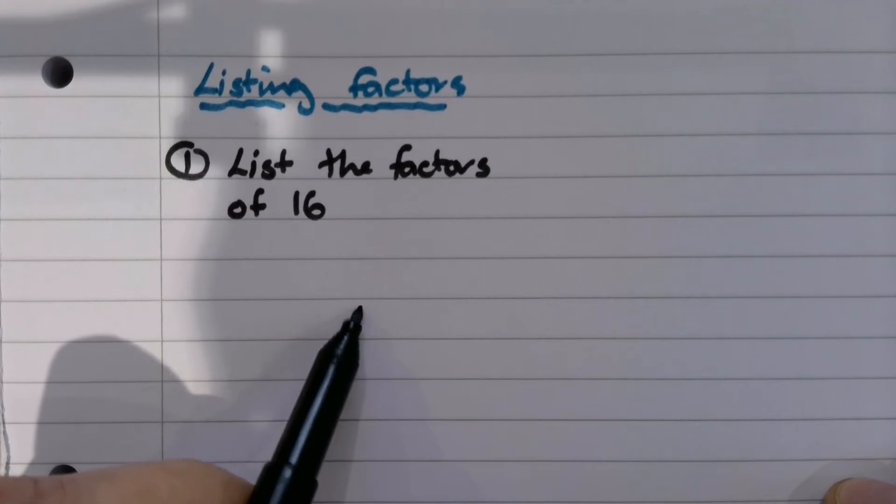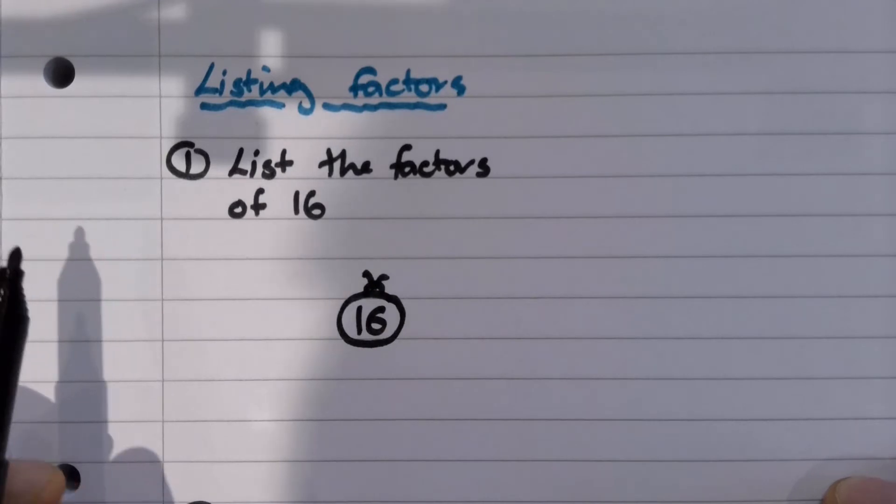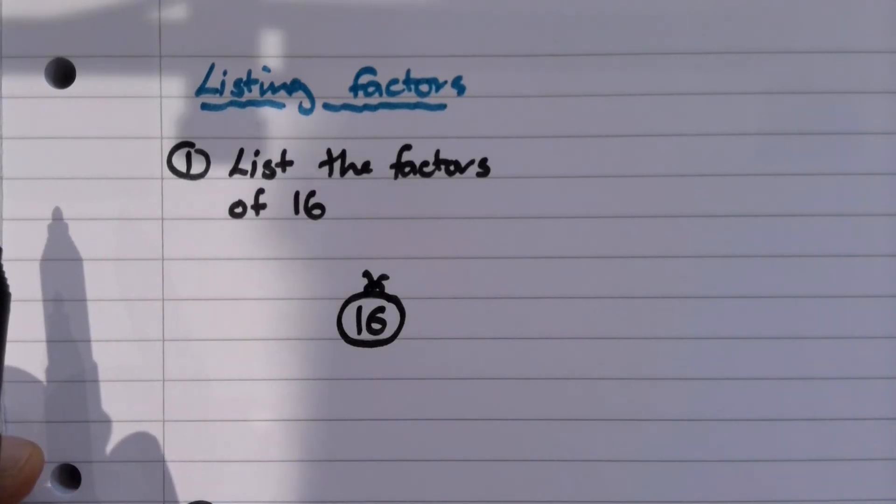So we're going to draw a factor bug for the number 16. Okay, and there's its head. And a factor is a number that goes into another number with nothing left over. So it's something that goes into it exactly.